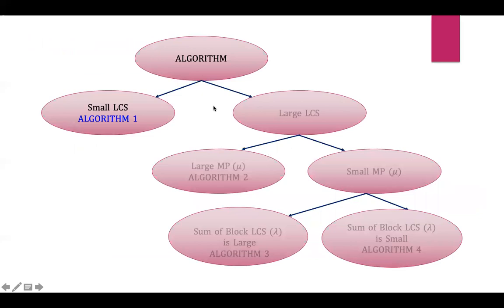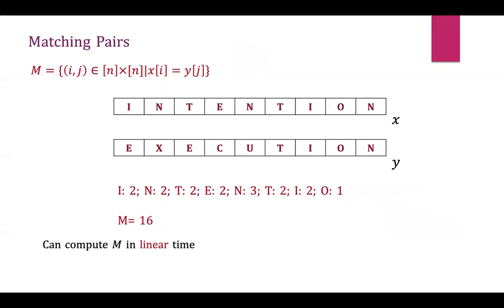Our main algorithm has several components, each handling a special scenario. The first algorithm takes care of the case where the LCS length is small. Before describing the algorithms, I'll state a few definitions. A matching pair is a pair of indices i, j such that x_i equals y_j. For example, indices 1 and 7 form a matching pair because x_1 equals y_7.